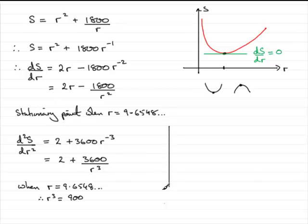So all we need to do is just say that d²S by dr² equals, well by substituting 900 into here, we get that it equals 2 plus 3600 all over 900.